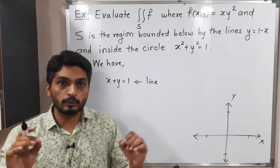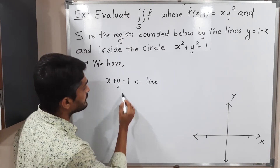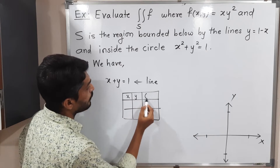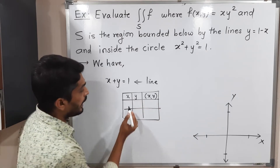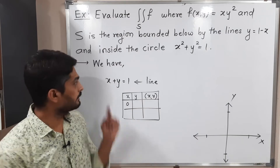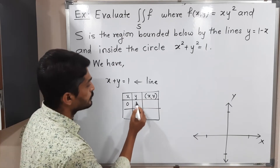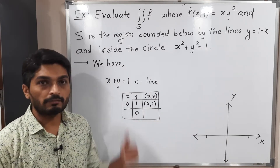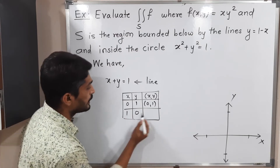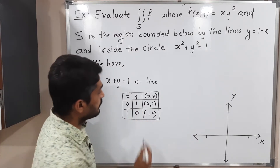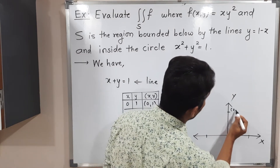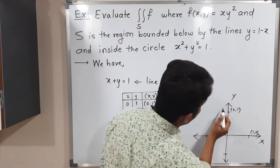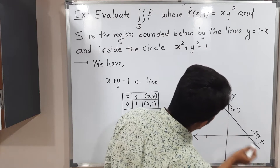To find that line, we need any two points on it. I am drawing a table with values of x, y, and the point (x, y). Putting x = 0 gives y = 1, so the point is (0, 1). Putting y = 0 gives x = 1, so the point is (1, 0). Let me join these two points to get the required line.